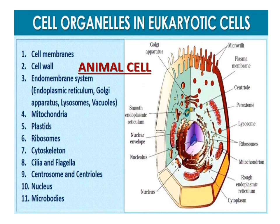In animal cells: cell membrane is present, cell wall is absent. The endomembrane system consists of endoplasmic reticulum, Golgi apparatus, and lysosomes. Vacuoles, if present, are of a primitive type. Mitochondria are present; plastids are absent. Also present are ribosomes, cytoskeleton, cilia and flagellum, centrosomes and centrioles, nucleus, and microbodies.